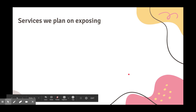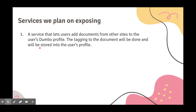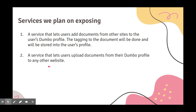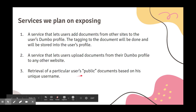Moving on to the services we plan on exposing. We plan to expose three services. The first lets users add documents from other sites into their Dumbo profile. The second service allows users to upload documents from their profile to any other site. All documents need not be private — documents like certificates, identities, and achievements can be put for public display by the user. The third service will allow people to view a particular user's public documents using the user's unique username.